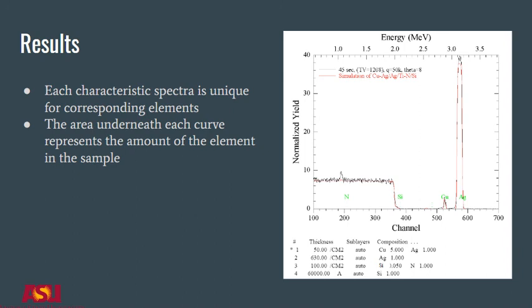In addition, the elemental composition and thickness of each layer is given, determining that this sample has a large silicon substrate layer, a layer of thickness 100 per centimeter squared of silicon nitride, a passivation layer of thickness 630 per centimeter squared of silver, and a surface layer of thickness 50 per centimeter squared of copper and silver.